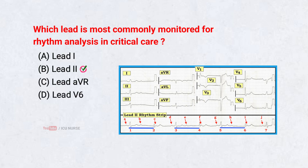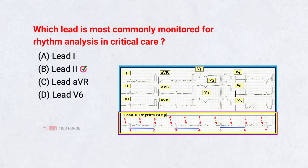Lead 2 provides the clearest view of P-waves and overall rhythm, making it the preferred monitoring lead for arrhythmia detection in critical care and emergency settings.